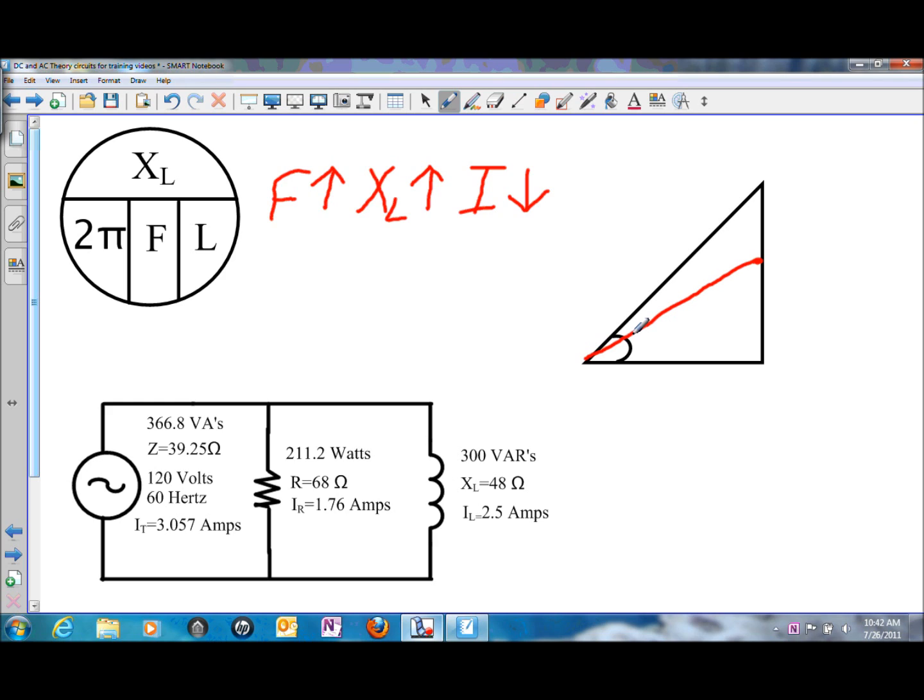And when we decrease it to that value, that is going to change angle theta and power factor as well. So angle theta is going to decrease. And angle theta and power factor are an inverse relationship - if angle theta goes down, power factor will also increase.